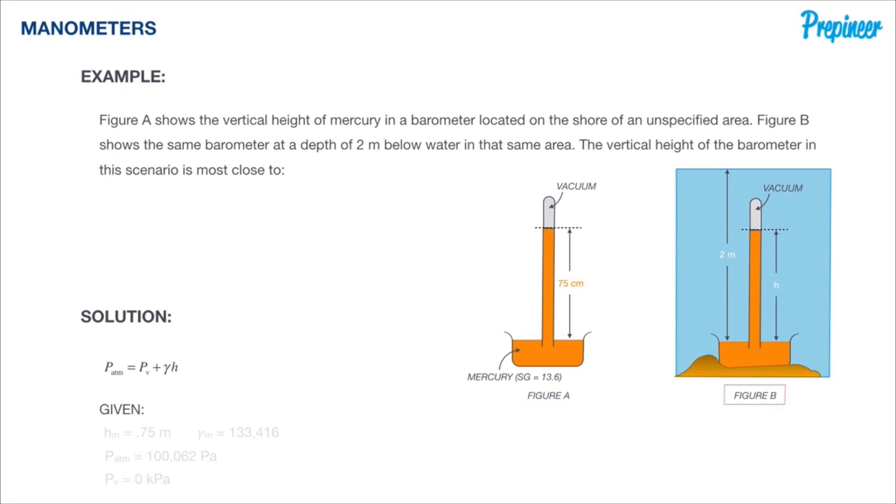So let's hop over to Figure B. Now we've taken that same mercury barometer, we're dropping it down two meters of water in this same unspecified area, and we need to determine what the height is of that mercury.